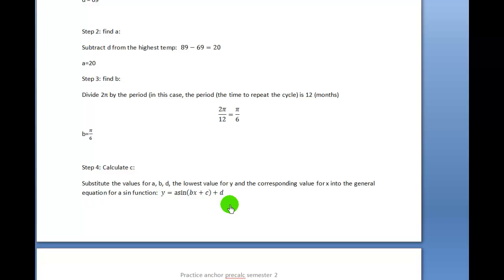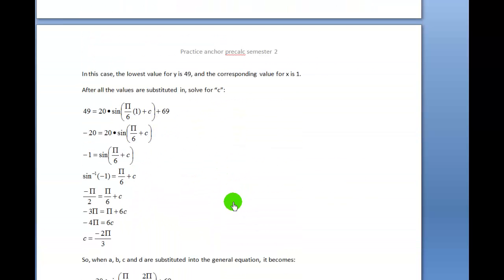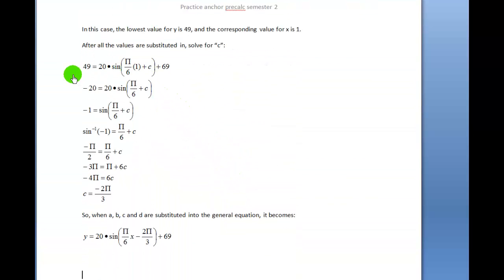We're going to put that into the general equation for the sine function. So instead of writing y equals a times the sine of Bx plus C plus D, we'll end up with 49 equals 20 times the sine of π over 6 times 1 plus C plus 69.